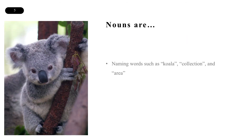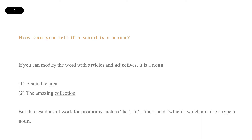Nouns are naming words such as koala, collection, and area. And how can you tell if a word is a noun? If you can modify the word with articles and adjectives, it is a noun.